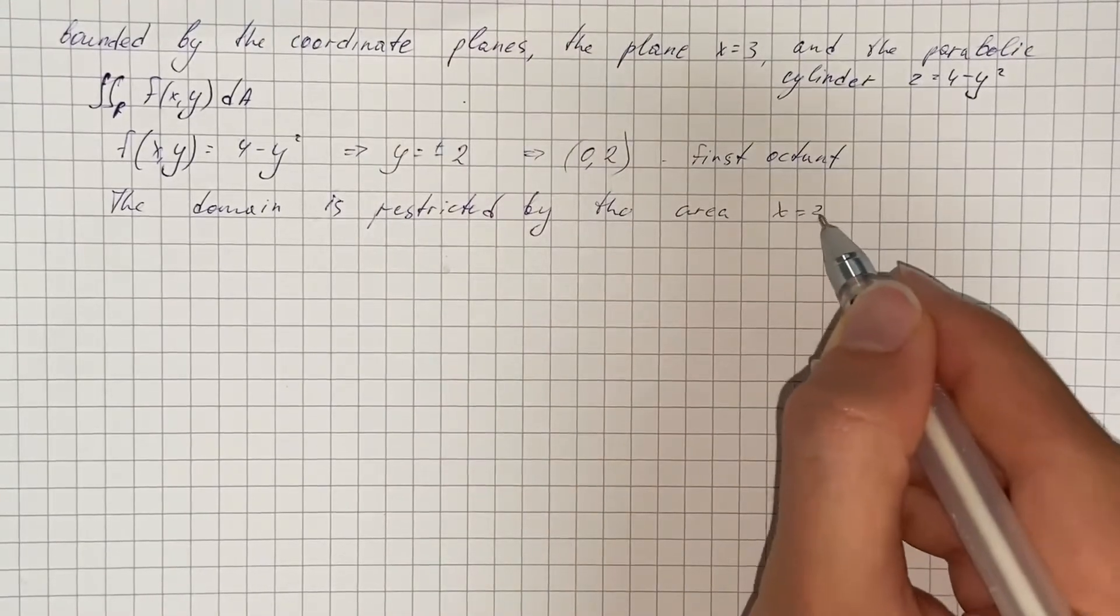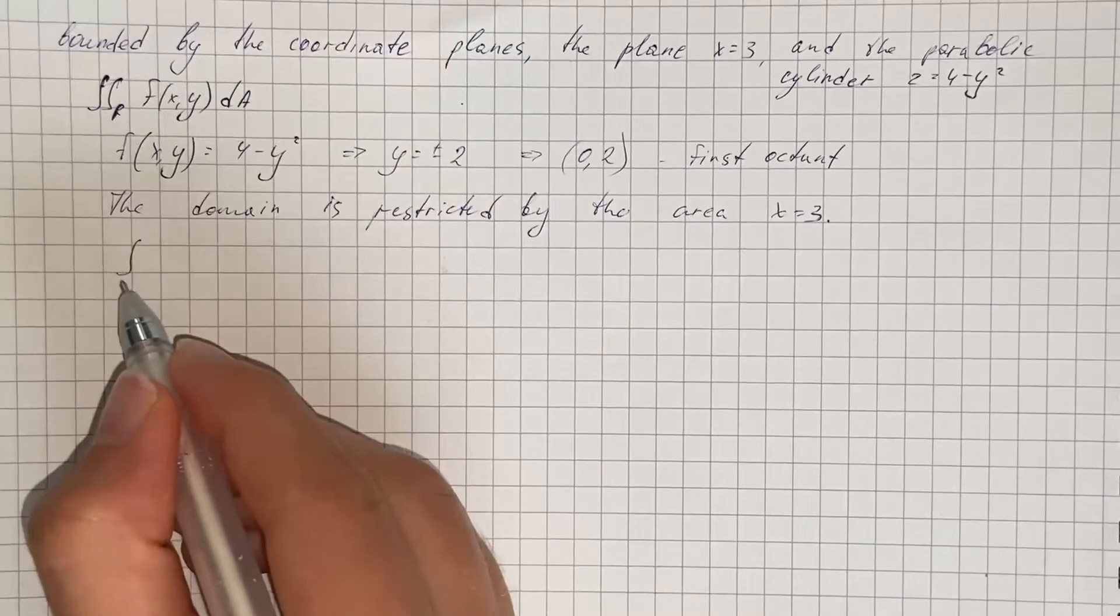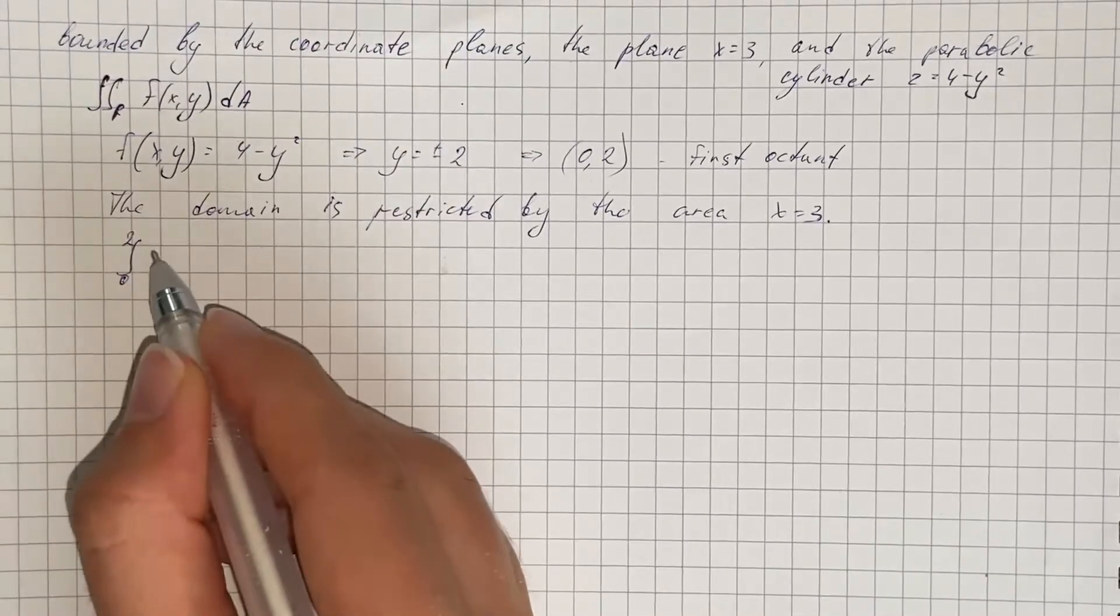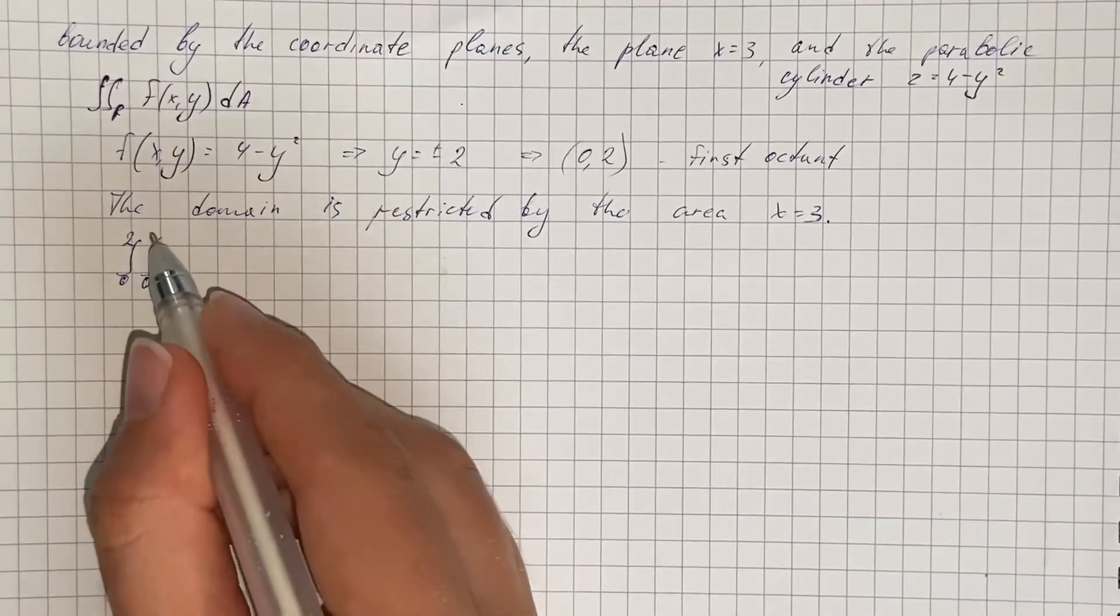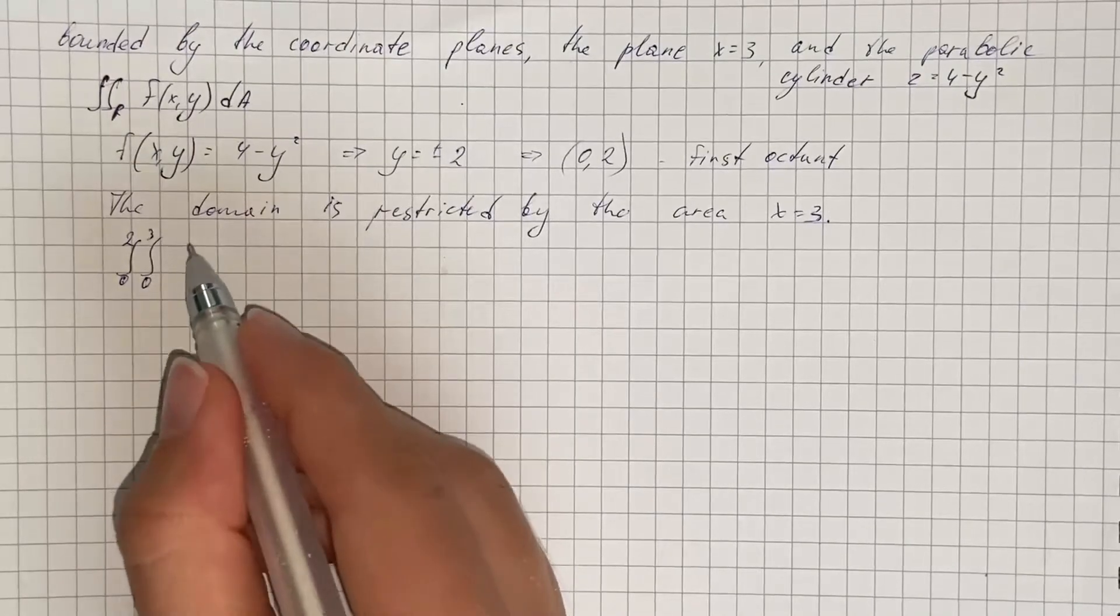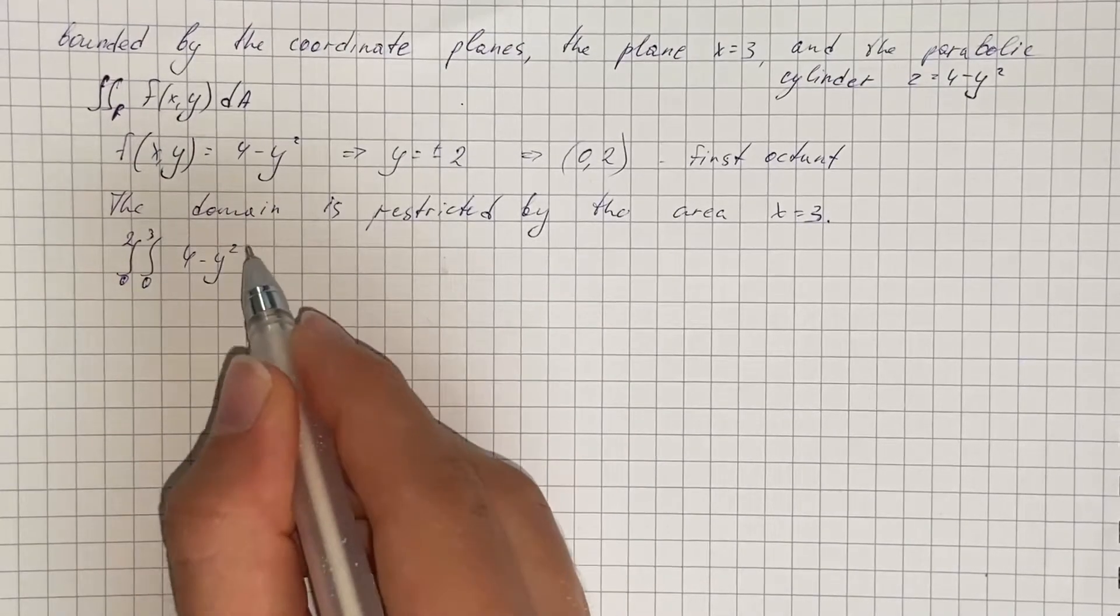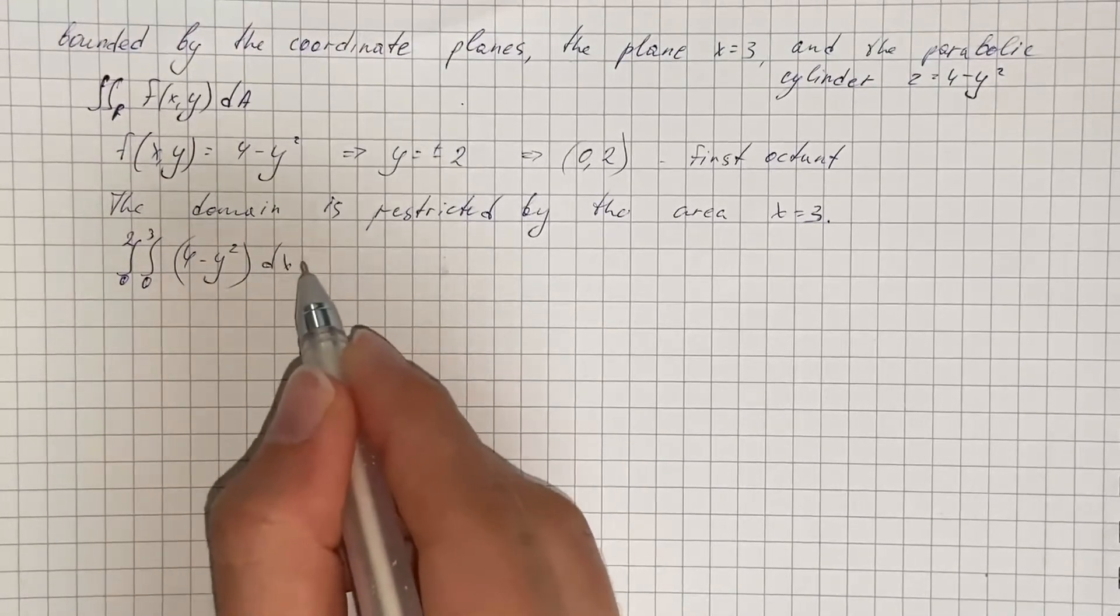Therefore our double integral looks like integral from 0 to 2, integral from 0 to 3, 4 minus y squared, dx dy.